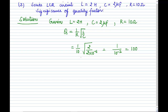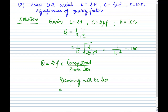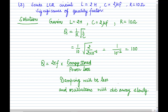The significance of the quality factor is defined as Q = 2πF × (energy stored / power loss). If the value of Q is high, it means the power loss is at a lower rate relative to the energy stored. This means the damping would be less and the oscillations will die away slowly. That is how you define the significance of the quality factor in your exams.